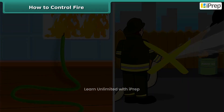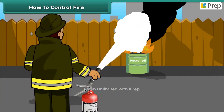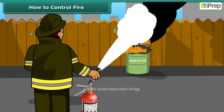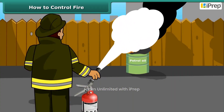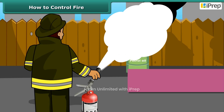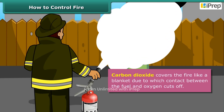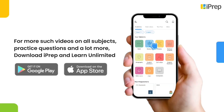For electrical and oil fires, it is best to use carbon dioxide as an extinguisher. Carbon dioxide, being heavier than oxygen, covers the fire like a blanket, due to which contact between the fuel and oxygen gets cut off.